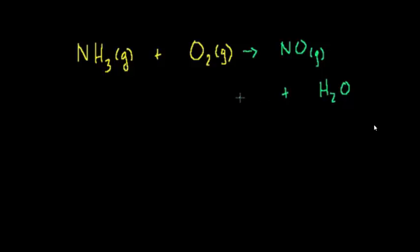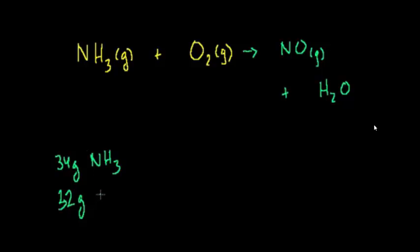We're given 34 grams of ammonia and 32 grams of oxygen, O2. The question is how many grams of nitrogen monoxide, or nitric oxide, NO, are going to be produced?